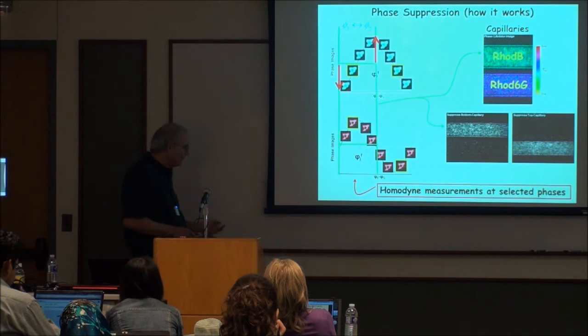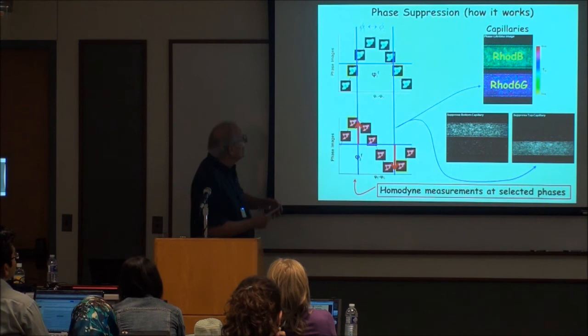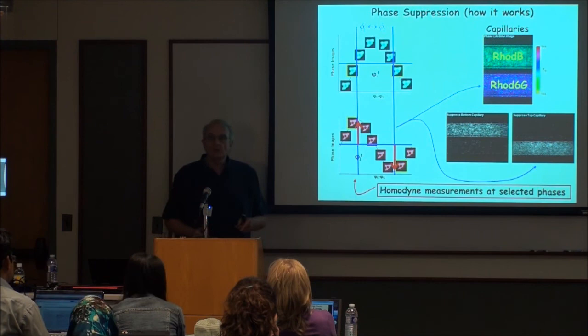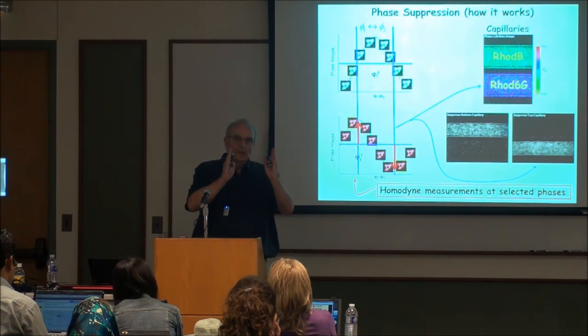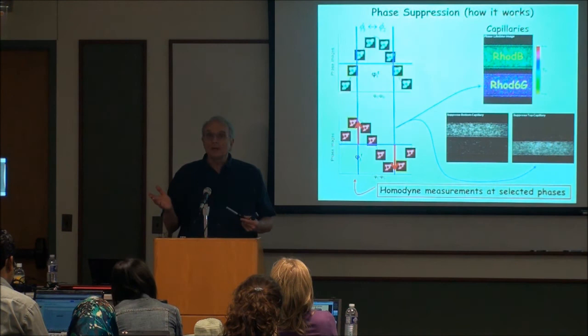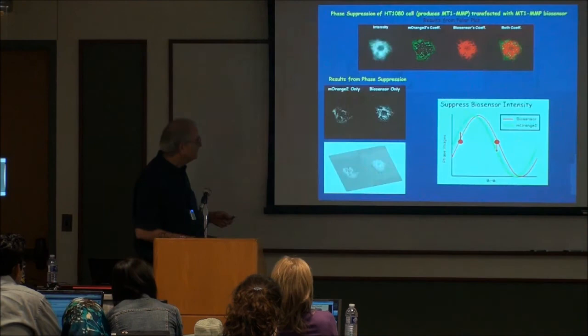If we set up our instrument to gather just two specific phases, one component disappears and we can see only the other one. We can either see this one or that one — and that's an immediate measurement: just two images. We can select those two phases wherever we want, so we can look for specific things. We can say, 'I don't want to see something that has a certain lifetime' — which is very convenient because quite often the background has a lifetime we don't want to see. We just set it up so we don't see that, and only the other component remains.